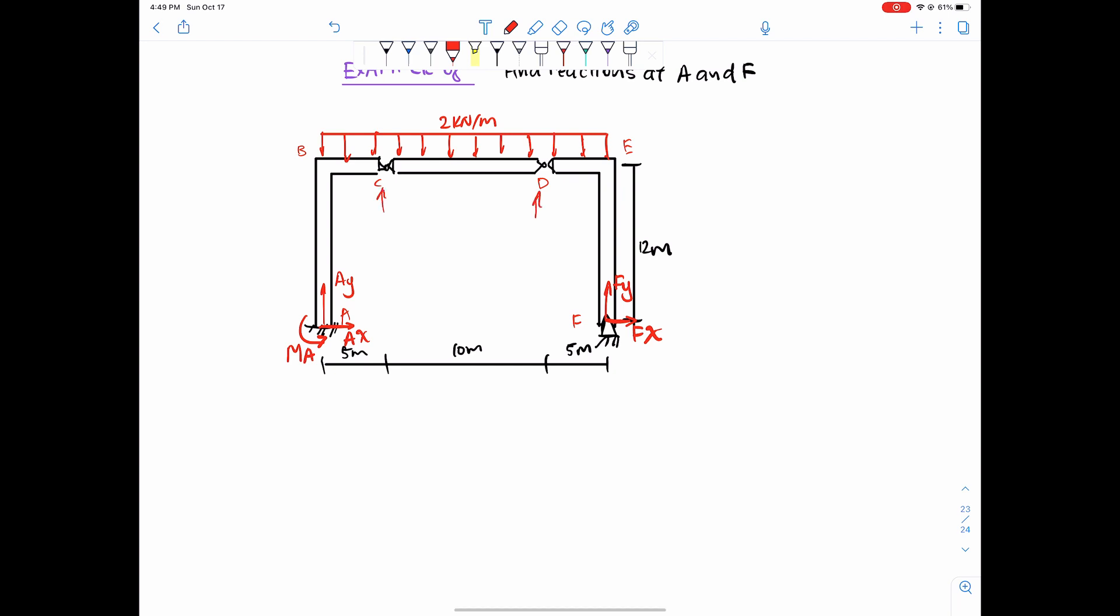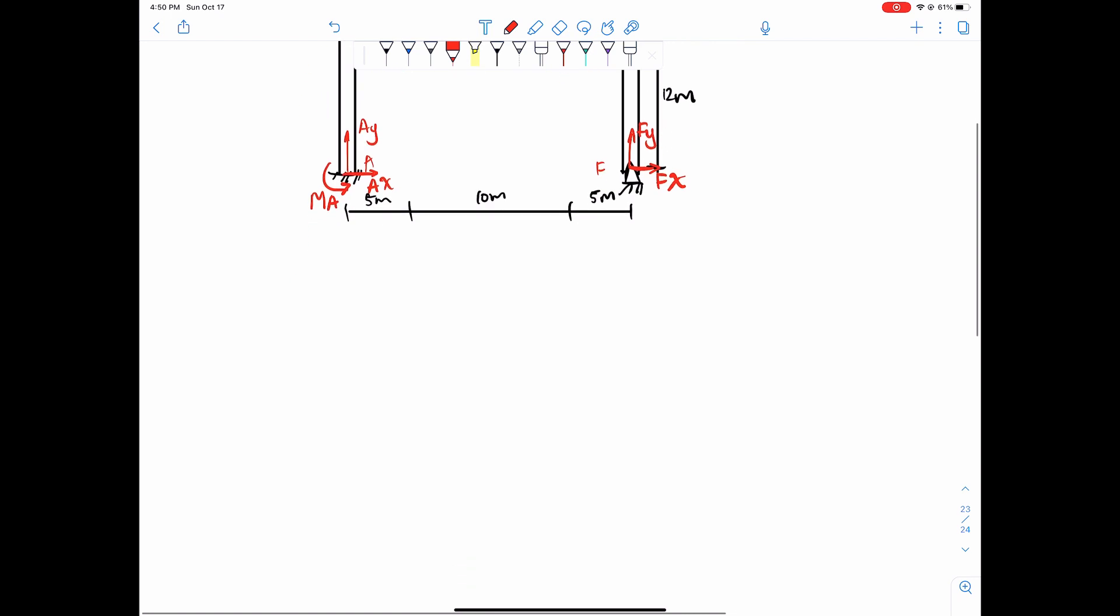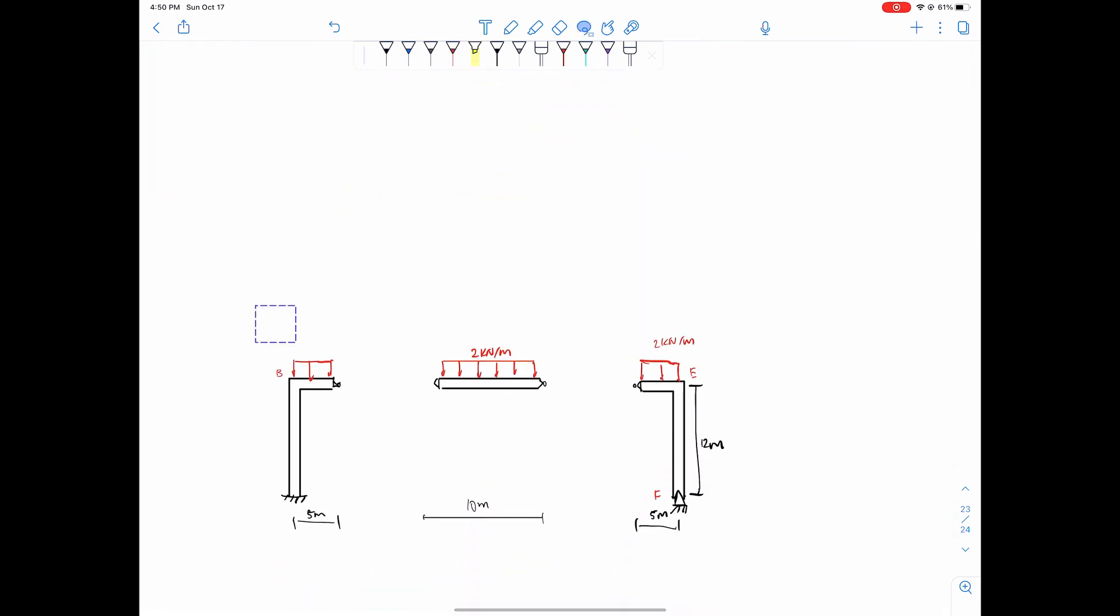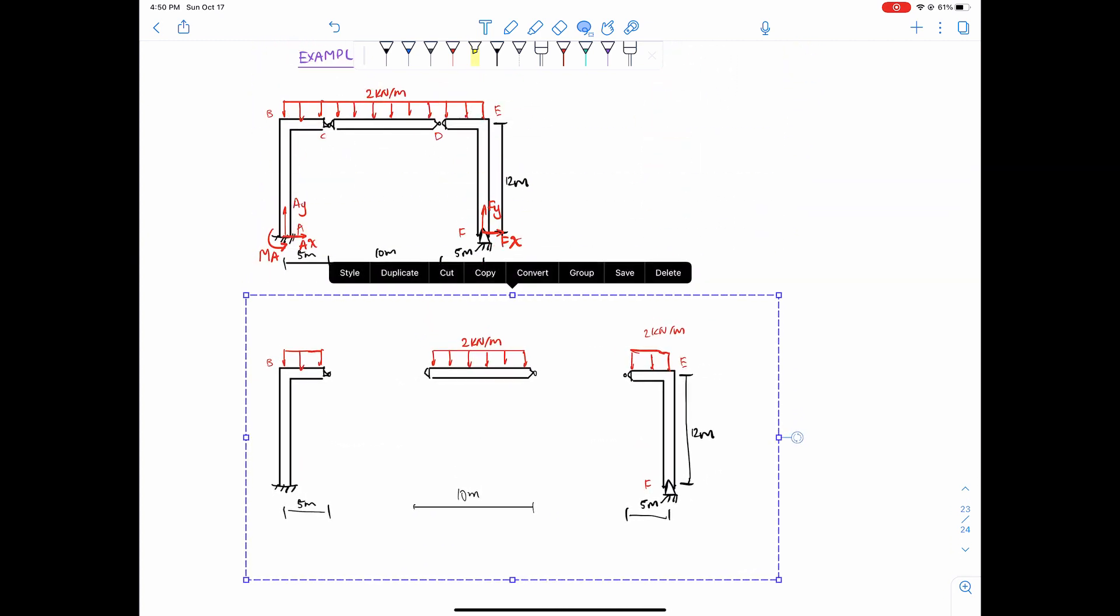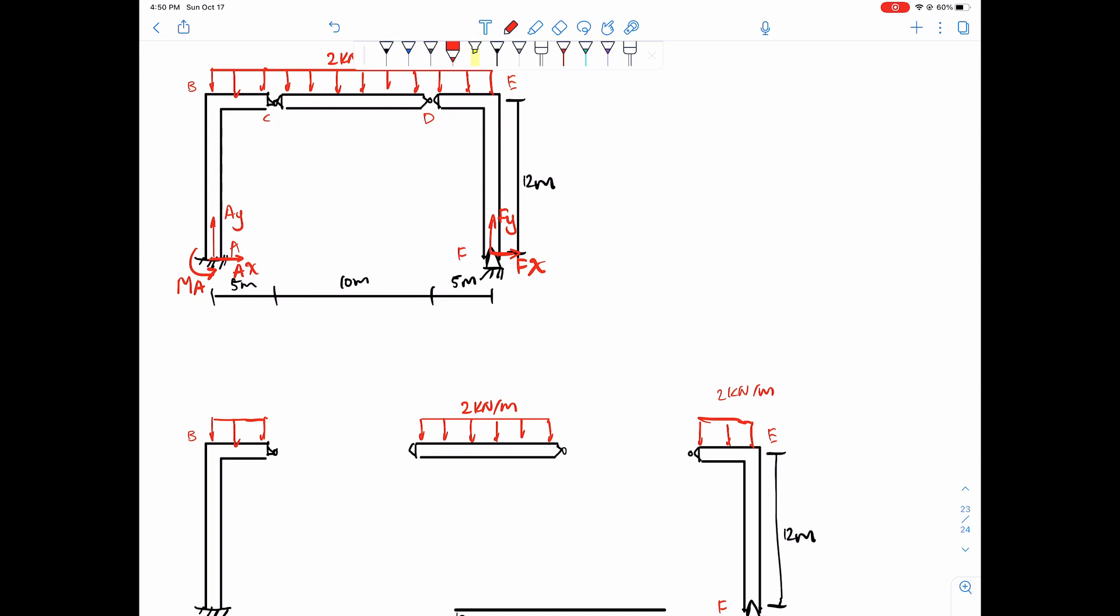So what we can do at those pins is simply just break up the system into individual pieces, and then when you break them up also add intermediate forces. I've split up the frame at where there are hinges. We are going to add the forces where we split.